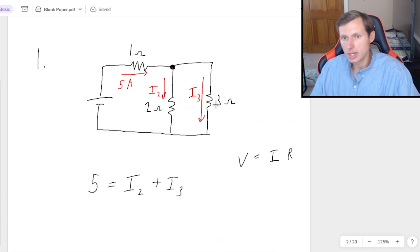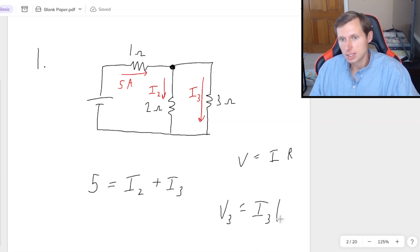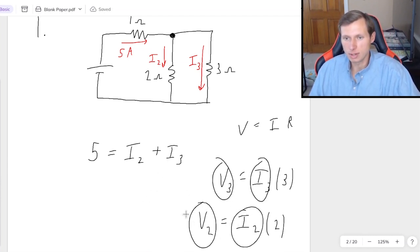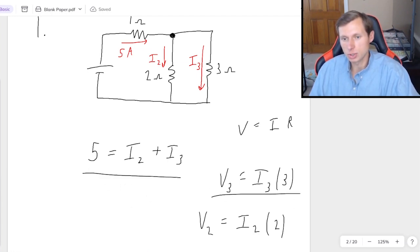So if I do Ohm's law on the 3 ohm resistor, then I'm saying voltage 3, which I don't know, is equal to current 3 times 3 ohms. And of course the problem I just created is I just made a new unknown variable, V3, which means I now need one more equation. And so that's just going to be Ohm's law for I2. And that would be V2 equals I2 times 2 for Ohm's law. But again, another problem arises because I just created another unknown variable. And if you've been counting, I now have four unknown variables.